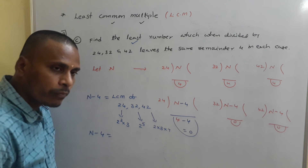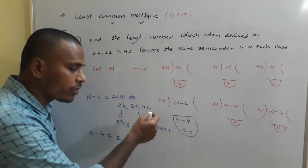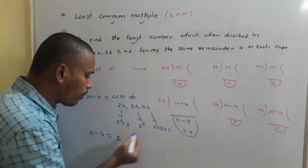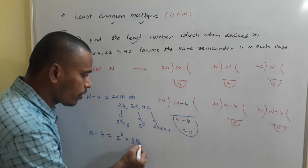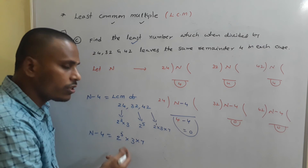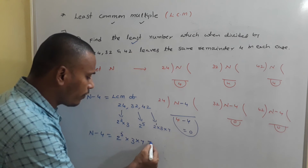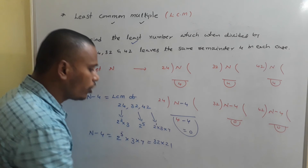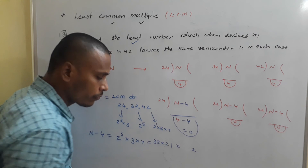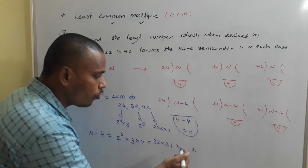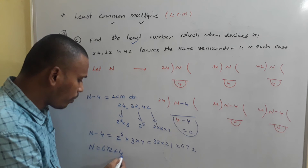LCM = 2⁵ × 3 × 7, taking maximum powers: 2 power 3, 5, 1 → max is 5. Then 3 power 1, and 7 power 1. So LCM = 32 × 3 × 7 = 32 × 21 = 672. Therefore N − 4 = 672, so N = 672 + 4 = 676.